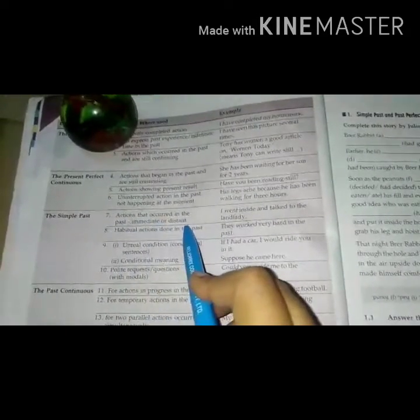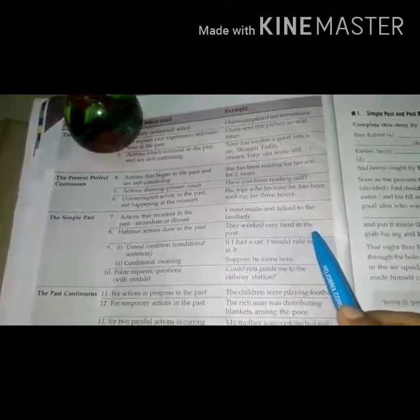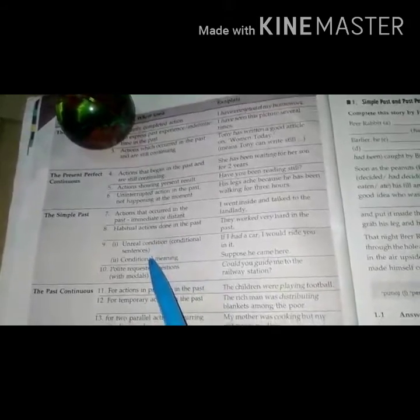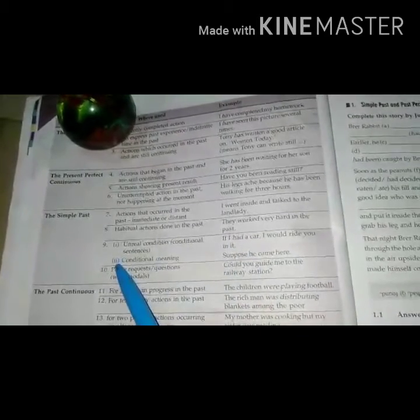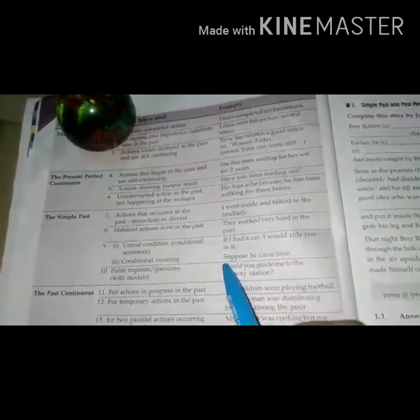The simple past: Actions that occurred in the past, immediate or distant - I went inside and talked to the landlady. Habitual actions done in the past: They worked very hard in the past. Unreal condition or conditional sentences: If I had a car, I would ride you in it. Conditional meaning: Suppose he has come here. Number 10, polite requests or questions with models: Could you guide me to the railway station?